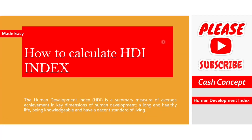The Human Development Index is a summary measure of average achievement in key dimensions of human development: a long and healthy life, being knowledgeable, and having a decent standard of living.